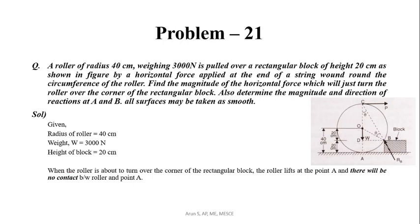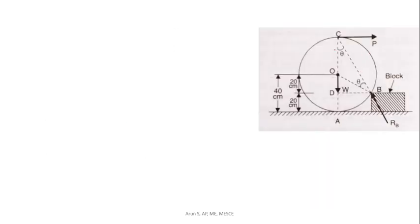Reaction at A will be equal to zero. When the roller is about to turn over the corner of the rectangular block, the roller lifts from point A. There will be no contact between roller and point A, so reaction at A, R_A, will be equal to zero. The reaction is only at point B. Given roller radius is 40 cm, weight is 3000 N, and height of the block is 20 cm. Hence the reaction R_A at point A will be equal to zero in the just-to-turn-over condition.